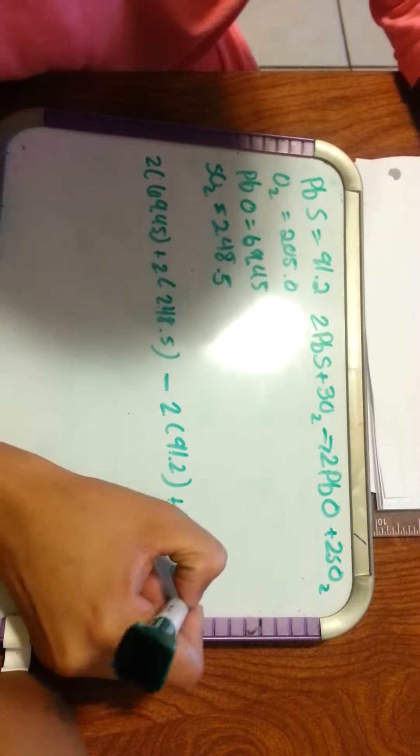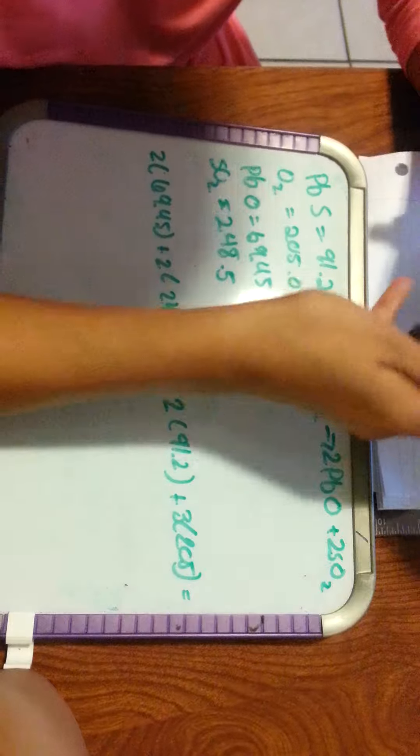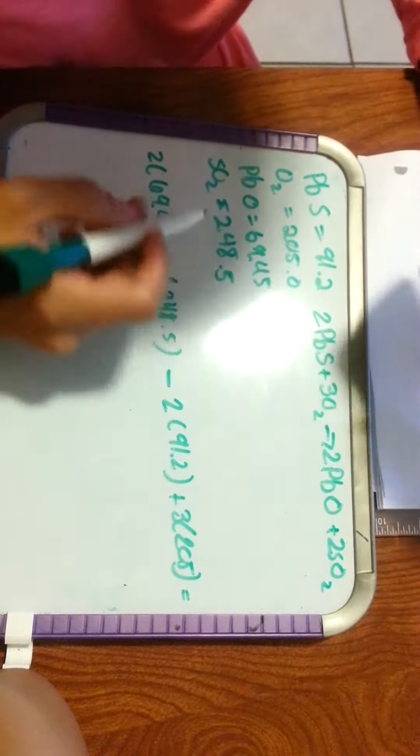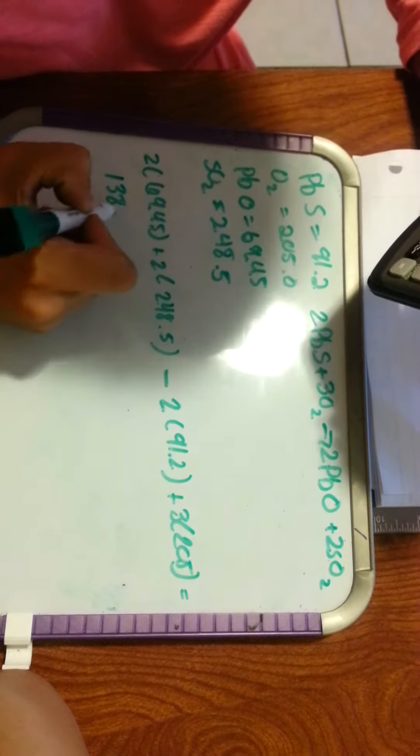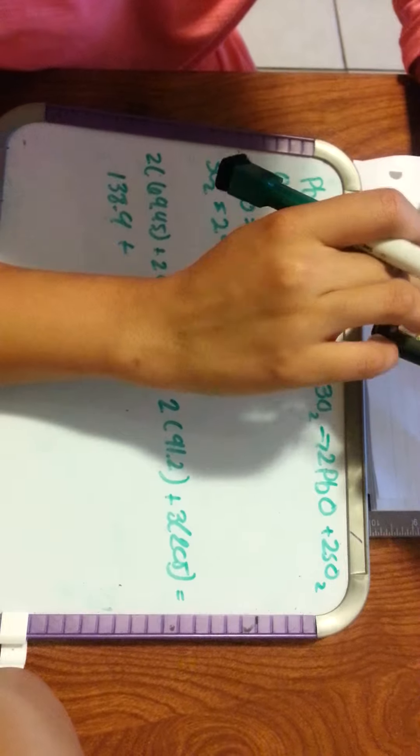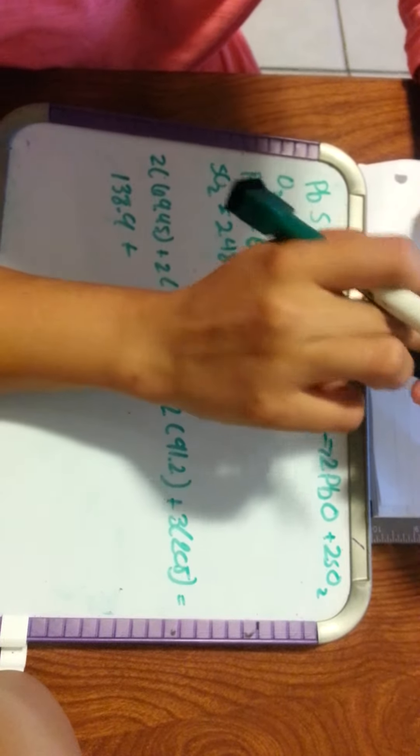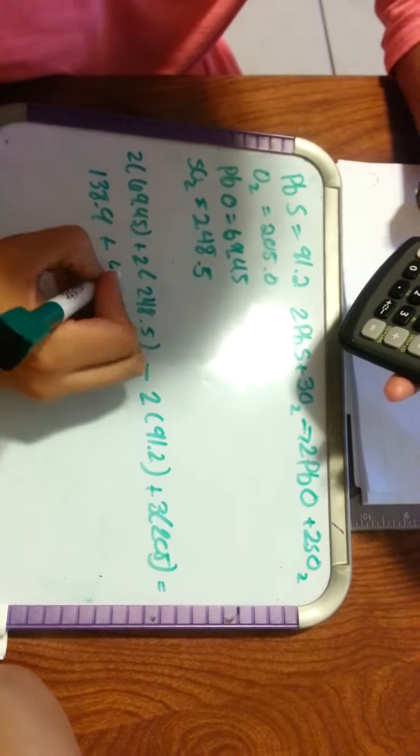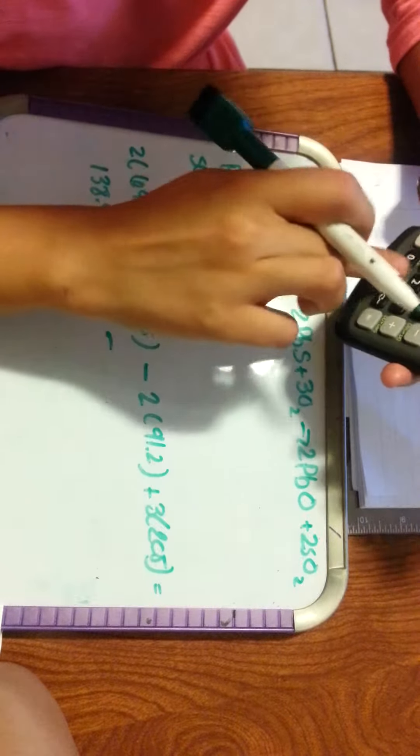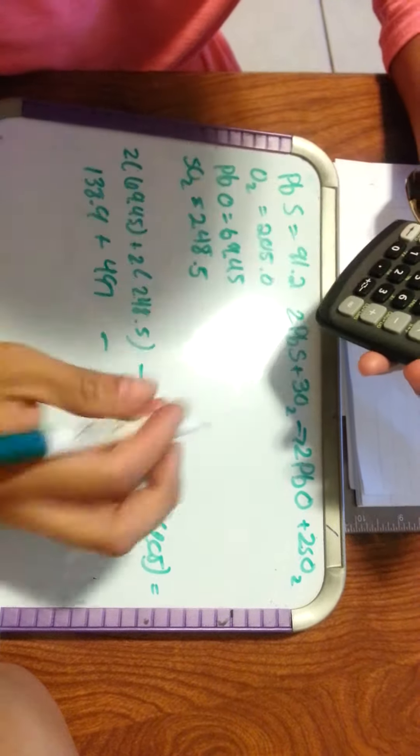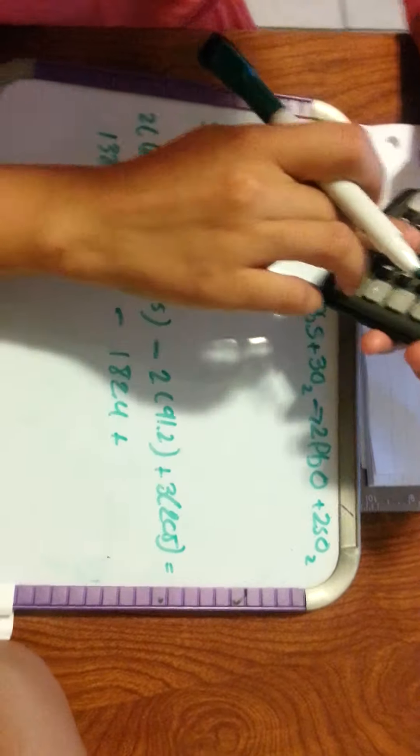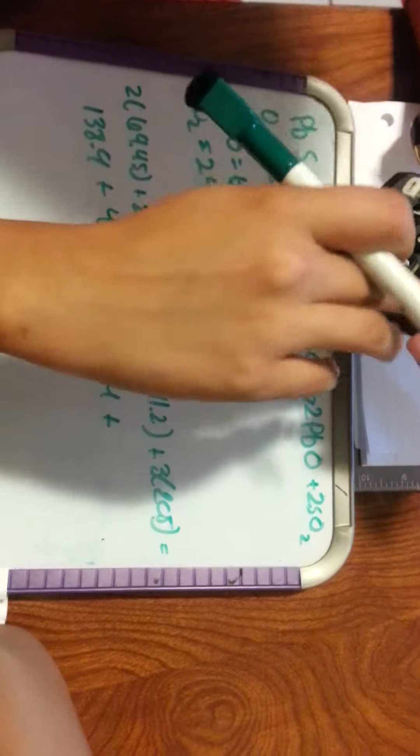Now we just plug all that into our calculator. 69.45 times 3 plus 248.5 times 2, so then 497 minus 91.92 times 2 plus 1, 82.4 plus 205 times 3.